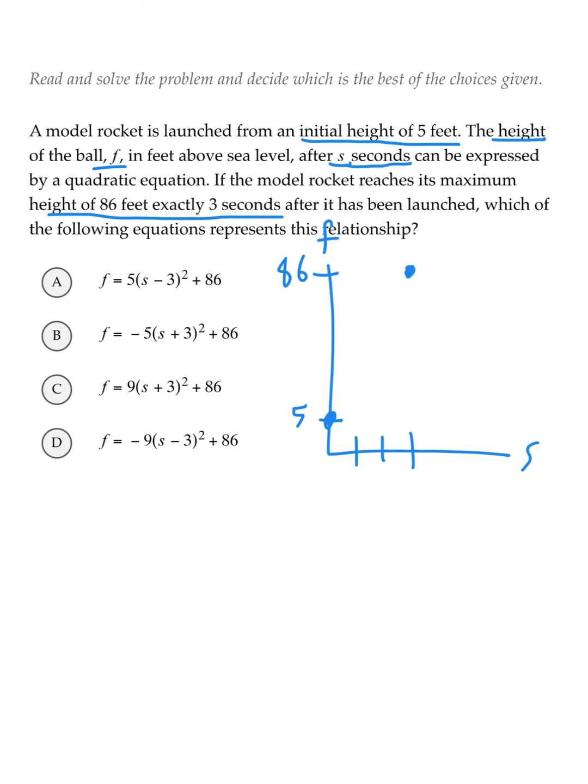The question gives us another clue as to how we can solve it, by saying that we can express the relationship of the rocket's launching into air through a quadratic equation. That key phrase, quadratic equation, tells us that the rocket took more a path of a parabola than a straight line.